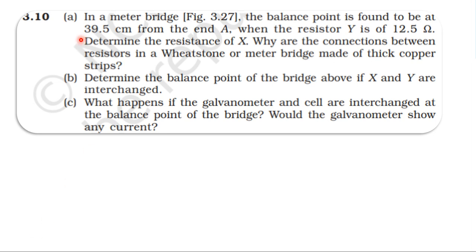From NCERT/INSATI textbook, Current Electricity topic, Exercise 3.10. In a meter bridge, the balance point is found to be at 39.5 centimeters from end A when the resistance Y is 12.5 ohm. Determine the resistance of X.